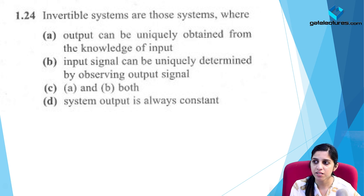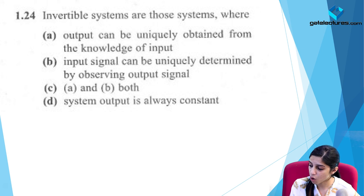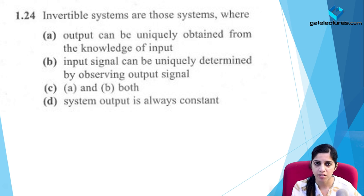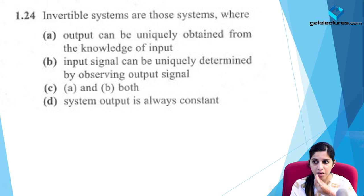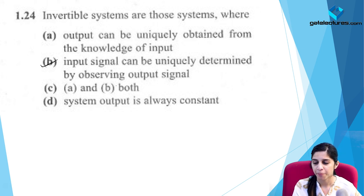Invertible systems are those for which the input signal can be uniquely determined by observing the output. Like addition and subtraction, these allow reconstruction of input from output. The correct option is B: input signals can be uniquely determined by observing output.